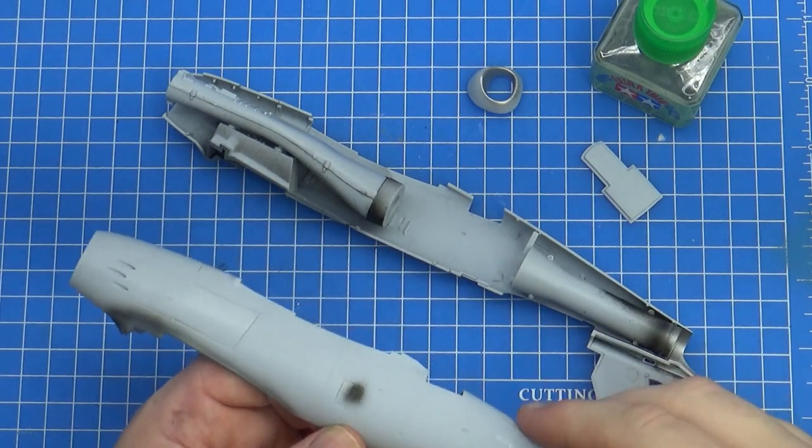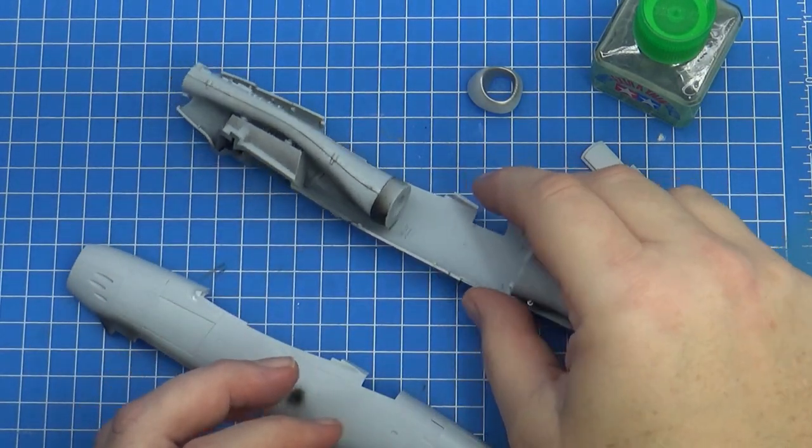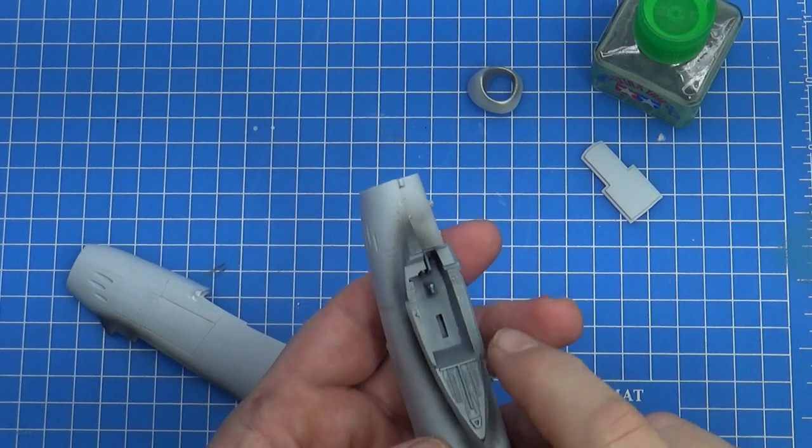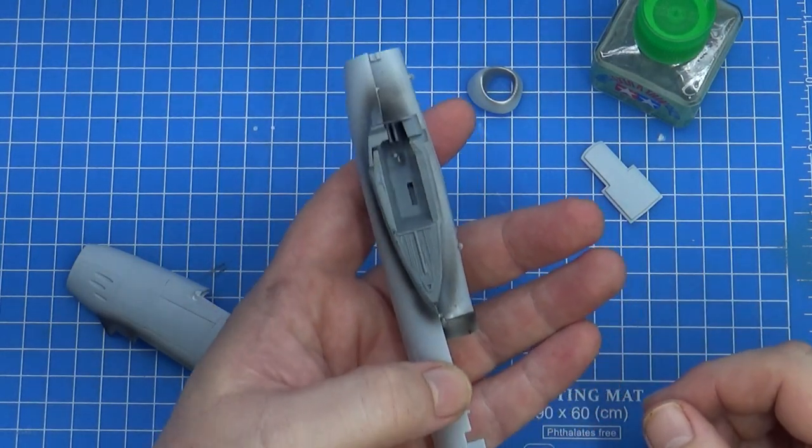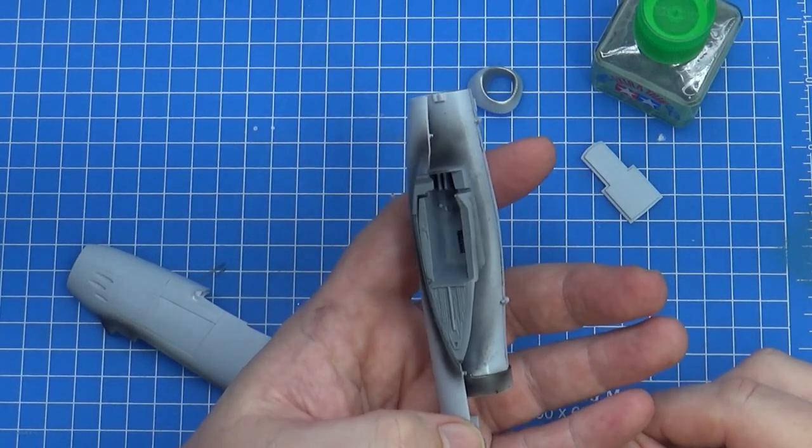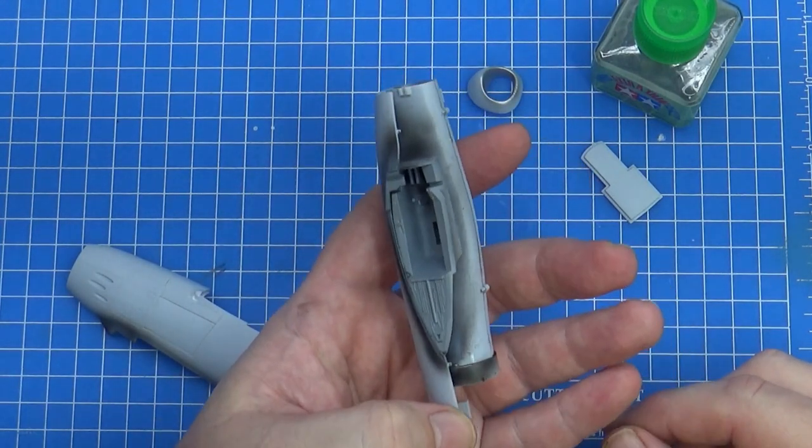Time to glue the fuselage halves together. I haven't actually finished painting the cockpit tub, just got to paint a few things. I might end up using the decals on the side there instead of just hand painting. But there's not much there. There's not a lot of detail in this kit. It's okay, but it's nothing to write home about.